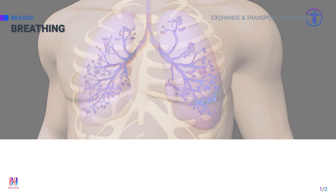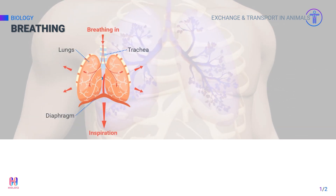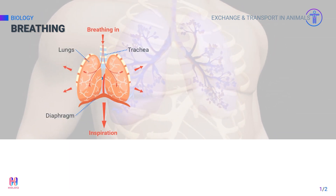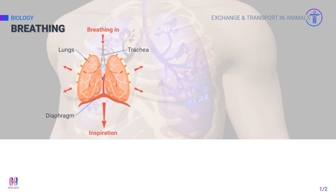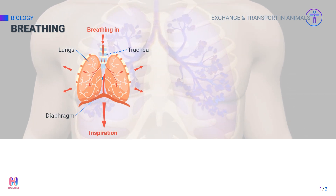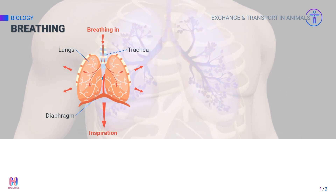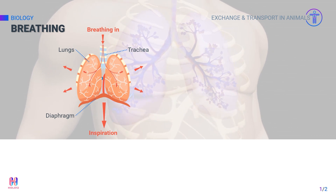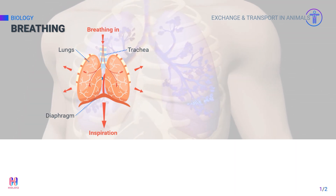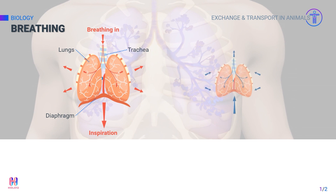When the intercostal muscles contract, the ribs move outwards and upwards, and the diaphragm contracts and gets flattened. These two changes increase the space in the thoracic cavity, resulting in the movement of air inside during inhalation.